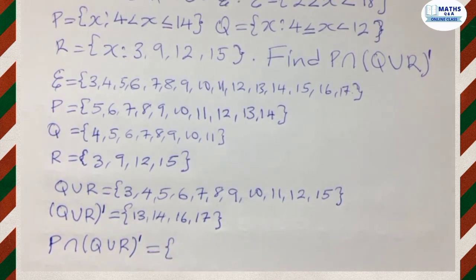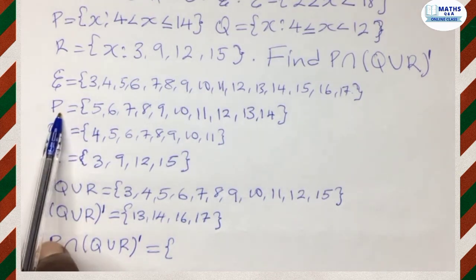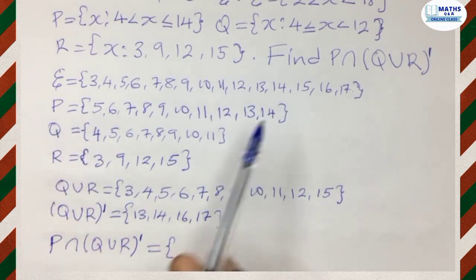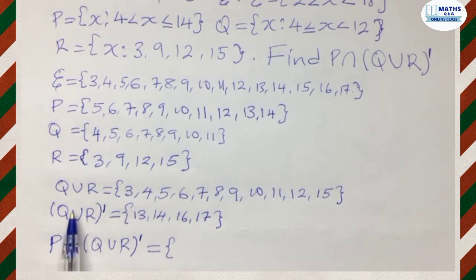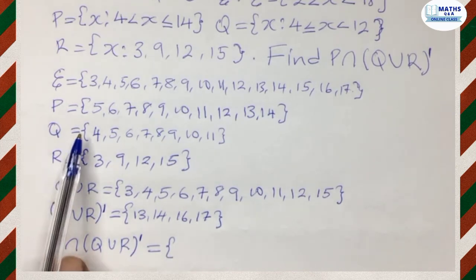So we're looking at P intersection Q union R complement. Now, what is that giving us? Let's go back to the set, the set P. Now we compare the set P to the complement of Q union R, and we're looking for the common elements in both sets.